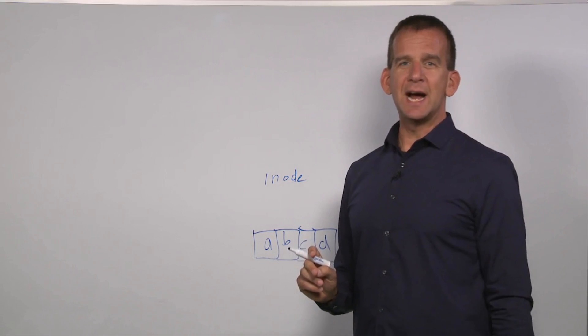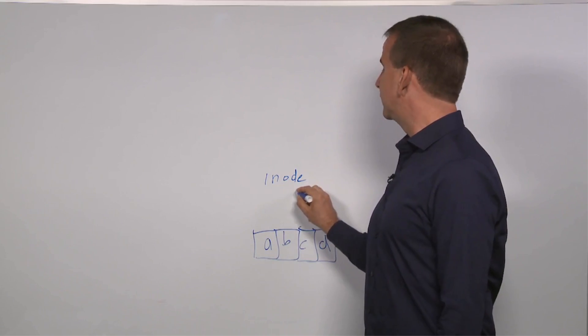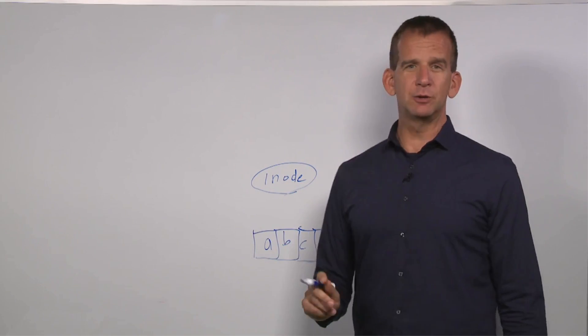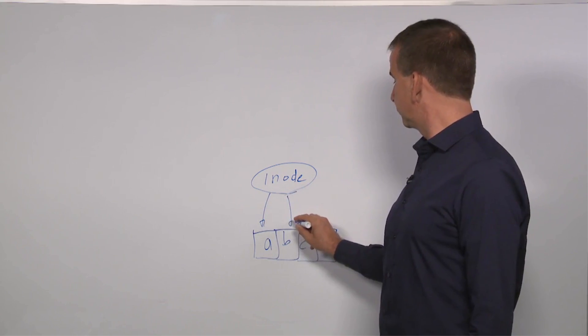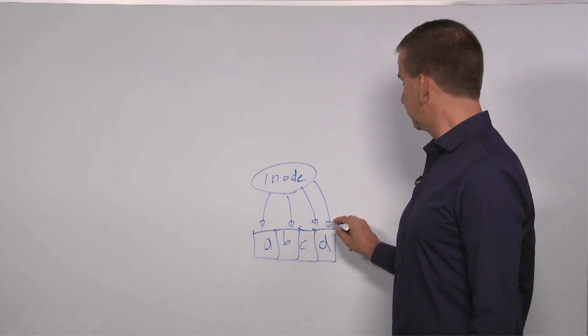All the administrative data of a file is in the inode. Every file has one single inode. And from the inode, the blocks of the file are referred to.